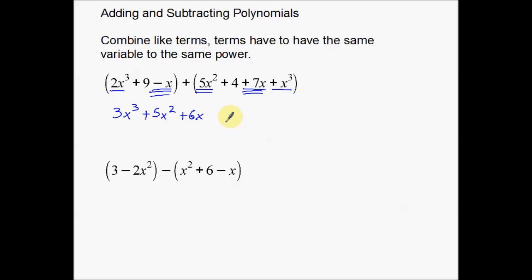Again, the exponents are not going to change. It's only the coefficients, only the numbers out front. And then, last but not least, I have my constants. I got nine and four, which is going to make 13. I'm not going to put lines underneath those. And that's it. That is my simplified polynomial.